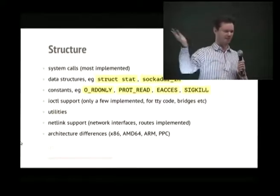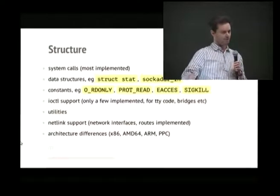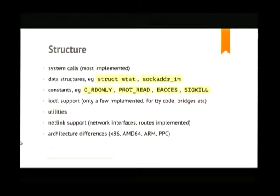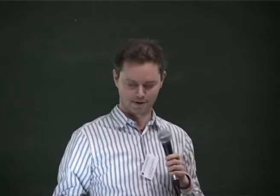I've been building this over the last couple of years. I started with system calls, which are mostly done — you can call most of the system calls, a few left to do. There are all the data structures that come with them: all the struct stats, socket addresses, lots and lots of these things. Then there are a lot of constants — every system call, you look at the man page and there's a list of 20 constants. There's ioctl, which I've done some of, but there are infinite numbers of them, and they're all different and inconsistent, so I've only done ones as I've used them.